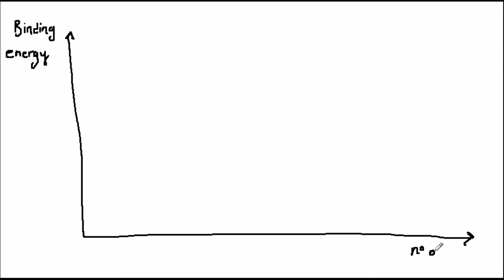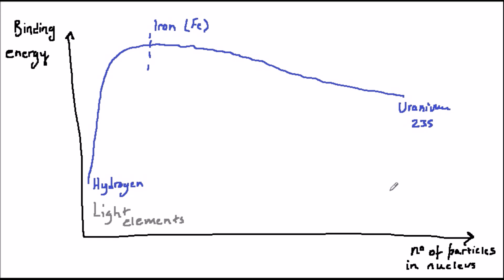Elements lighter than iron tend to fuse. Those heavier tend to fission. This can be seen in a diagram of the potential energy contained in the nucleus, which is called the binding energy.